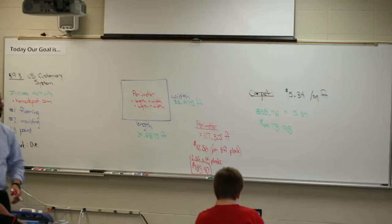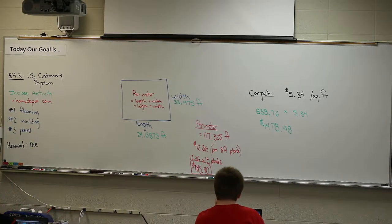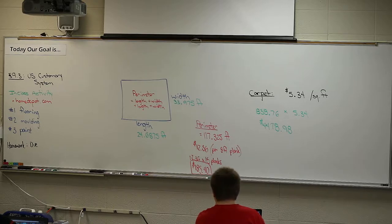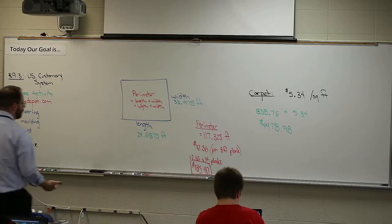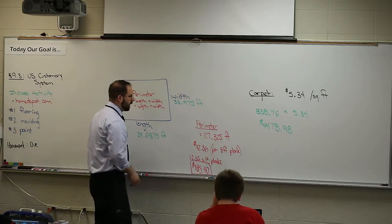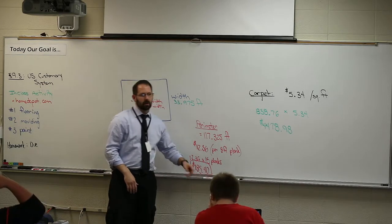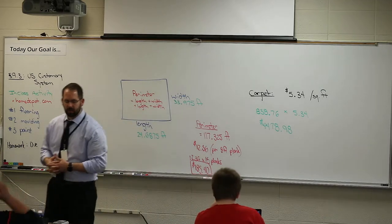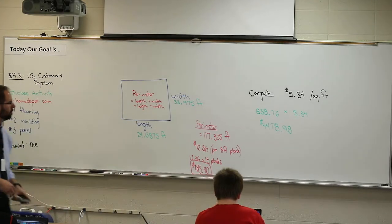You'd do the exact same calculation for floor molding. The difference we talked about yesterday is that for floor molding you have to account for the door frame as well, but we're not going to worry about that. For carpet you need the square footage, and for tile or hardwood planks you need to figure out the square footage per board.